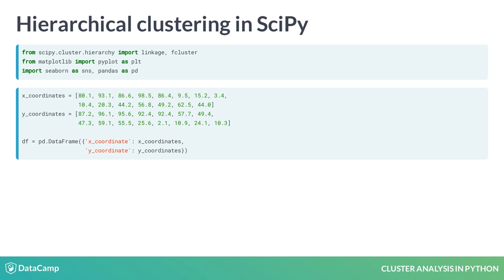A list of 15 points with x and y coordinates is stored in a dataframe. First, the linkage method computes distances between intermediate clusters. Next, the fcluster method generates clusters and assigns associated cluster labels to a new column in the dataframe.